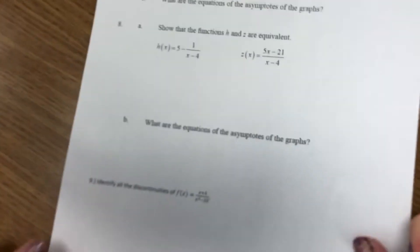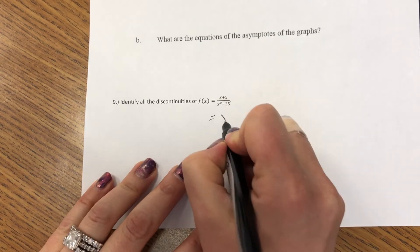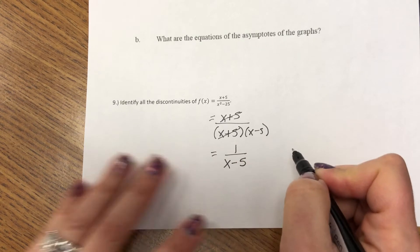Number 9 says, identify all the discontinuities. So again, I'm going to factor. And then I see that this factor eliminates, so we're left with 1 over x minus 5.